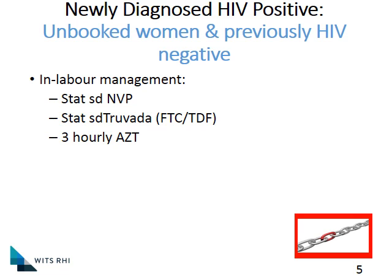In labour, we want to bring the viral load down as dramatically as possible. We give a stat dose of nevirapine, which is a very powerful drug that reduces the viral load very quickly. To cover the tail of that single dose nevirapine and add robustness to the regimen, we add a single dose of Truvada. Because labour may last several hours, we also start the mother on AZT, giving a dose every three hours throughout labour.